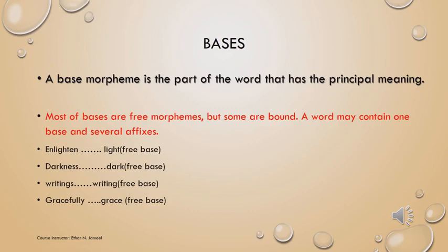Starting with bases — what is a base? A base morpheme is a morpheme that carries the principal meaning of the word. It carries the main meaning, the most important meaning. Words might consist of one, two, or more morphemes. Each one has meaning, but one of them has the principal meaning of the word — the most important meaning — and this is what is called the base of the word. So, the morpheme that has the most important meaning of the word is called a base.